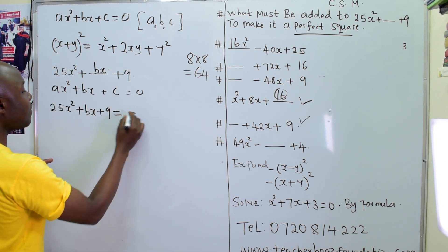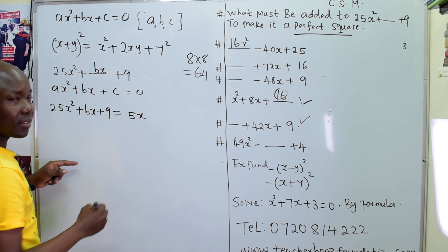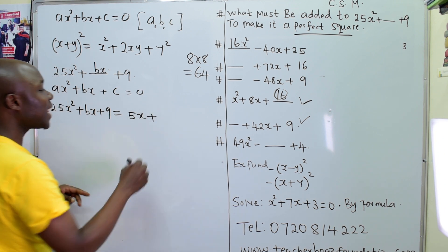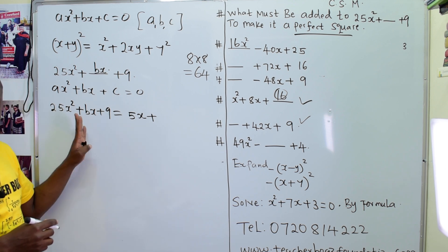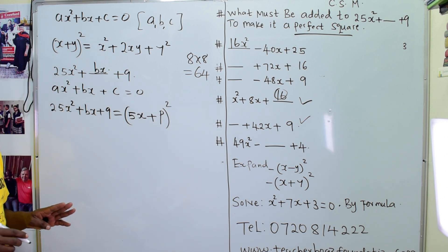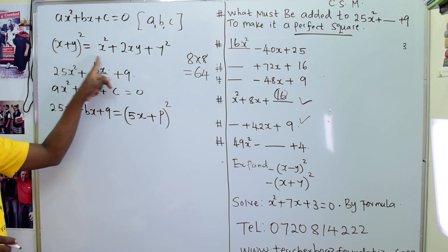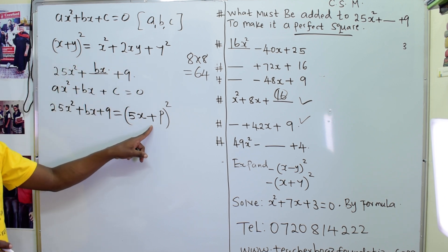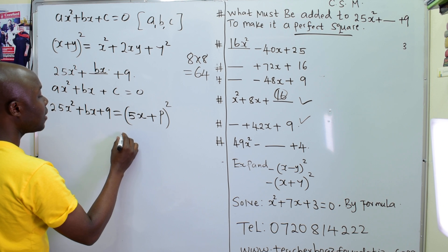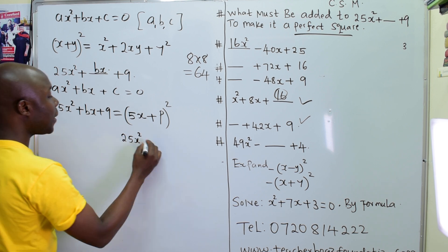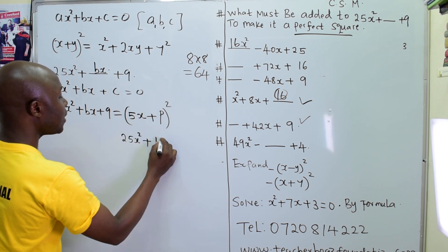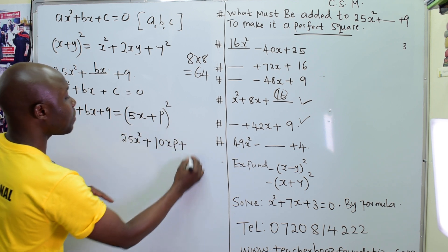Get the square root of 25, which is 5; square root of x squared, which is x. Add another letter, say p, then put in bracket squared. That's how this formula works — take the square root of the first part, add a letter you don't know, then bracket and square. Expanding: 25x squared, plus 5x times p times 2, which becomes 10xp, plus the last part squared.